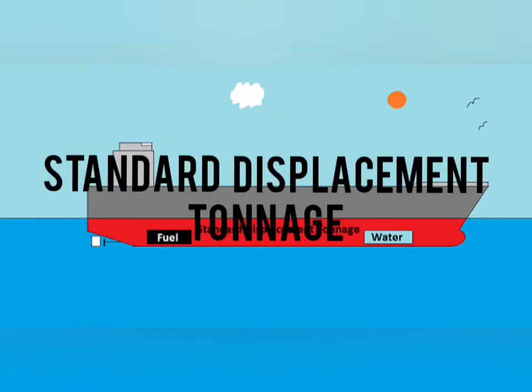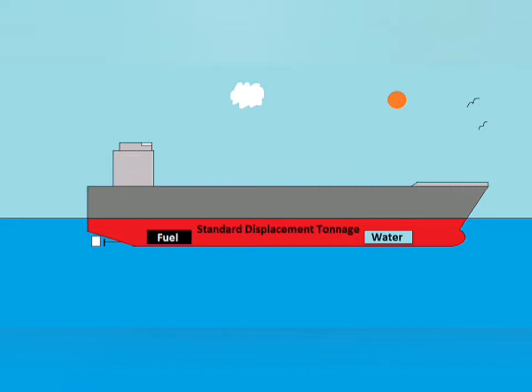Standard Displacement Tonnage. It is basically the same thing as Displacement Tonnage, with one minor difference. When we calculate the Standard Displacement Tonnage, we must subtract the weight of any fuel and potable water carried on board the ship.